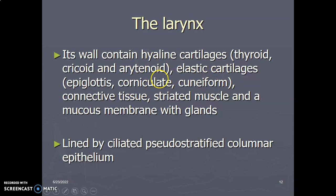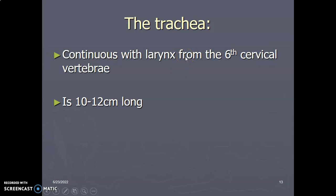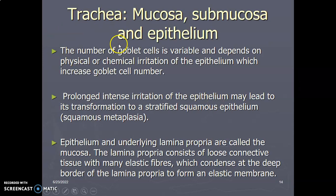The lining of the larynx is pseudostratified columnar ciliated epithelium. The trachea is continuous with the larynx — from the pharynx, air enters the larynx, and then from the larynx to the trachea. The origin of the trachea is the lower border of the cricoid cartilage of the larynx, consistent with the sixth cervical vertebra. The trachea is 10 to 12 centimeters long. Histologically, the trachea has a mucosa — the inner lining — followed by submucosa. The mucosa contains pseudostratified columnar ciliated epithelium with goblet cells.